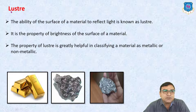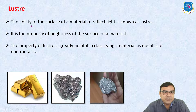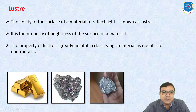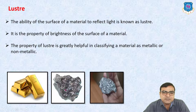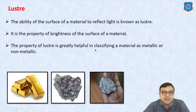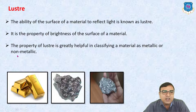The first property of metal is luster — the ability of the surface of the material to reflect light is known as luster. Most metals are lustrous in nature, so light is reflected from them. Luster is the property of brightness of the surface, and it is greatly helpful in classifying a material as metallic or non-metallic.